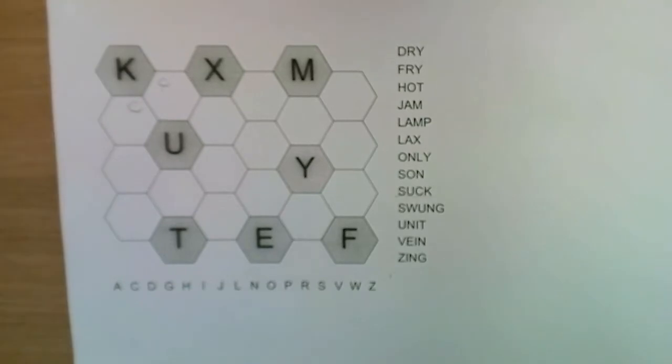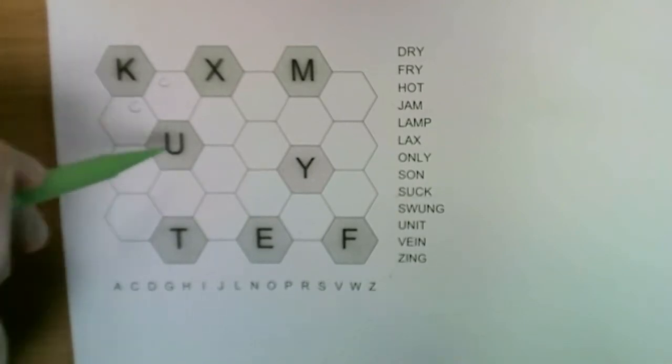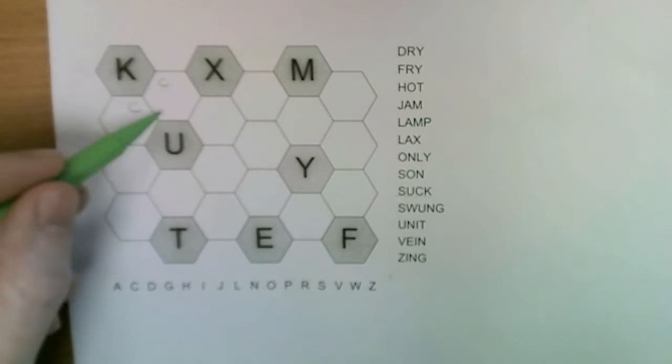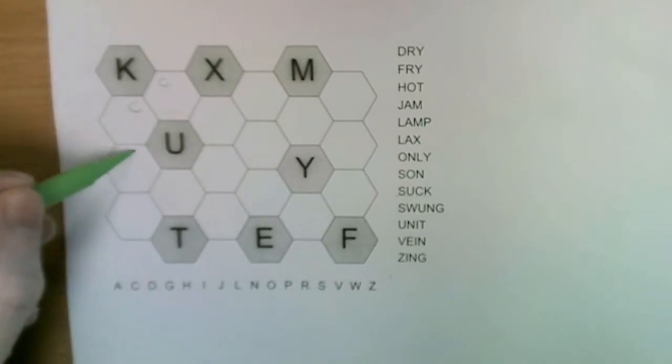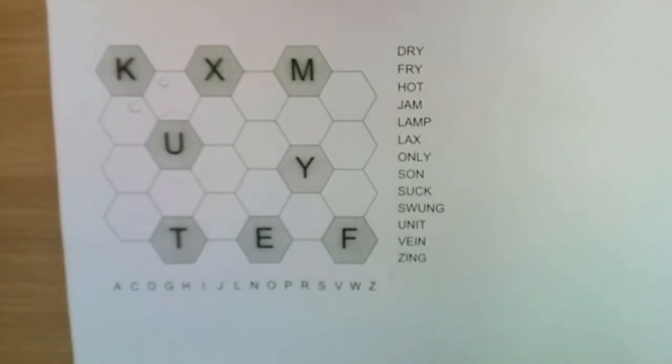You would write that in as a pencil mark, and then the U, so U-C-K, and then the S neighbors the U. So one of these squares contains the S, but because that's so many, I'm not going to write that in at the moment.